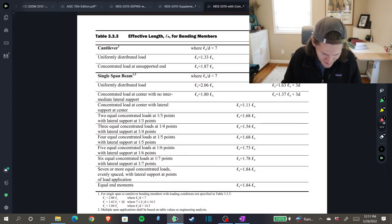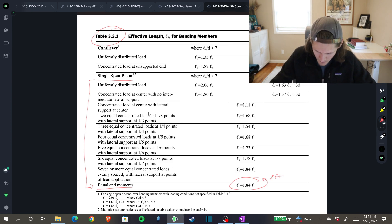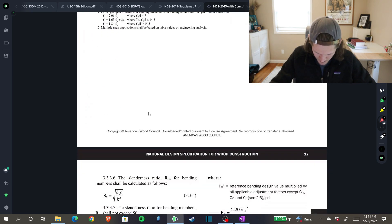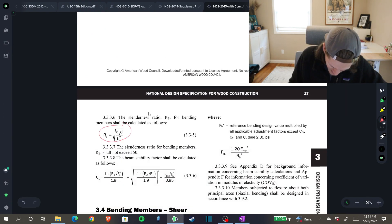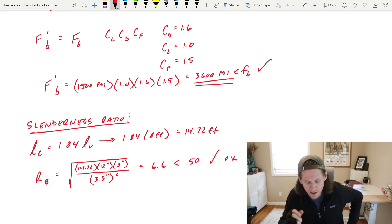But one more check that I want us to do is check slenderness for our post. First slenderness check that lands us in table 3.3.3. And we have a single span beam in our condition here. And we're actually a little out of the ordinary going all the way to the end. We have equal end moments, which means we're going to use this case. And our LU in this case is the height of the shear wall, which is eight feet. That gives us an LE of 14.72 feet. We need to make sure that RB does not exceed 50 for our slenderness ratio check for bending members. And there you have it. So we are okay.